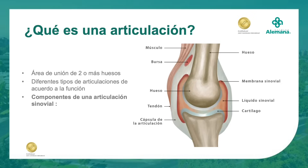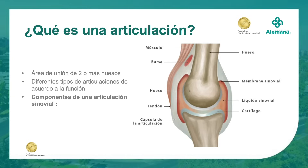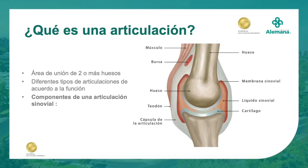En esta diapositiva les presento un esquema de una articulación en el cual se pueden ver las uniones óseas, los dos huesos, el cartílago que recubre los huesos y que permite que el movimiento sea suave, la membrana sinovial que recubre esta articulación en su cara interna, la cápsula articular que recubre la articulación por fuera, y componentes alrededor como los músculos, la bursa —pequeñas bolsitas que evitan fricción—, los tendones y los ligamentos. El líquido sinovial, producido por la membrana sinovial, permite un movimiento muy suave y una amortiguación de la articulación.